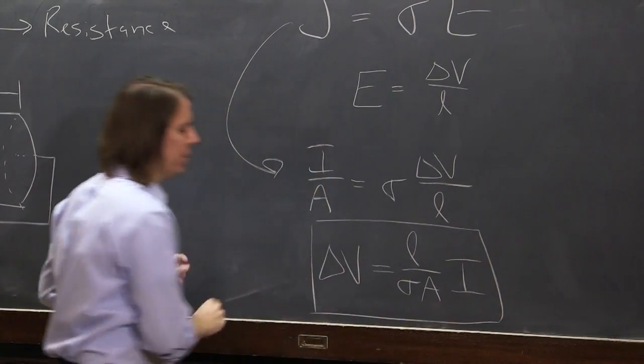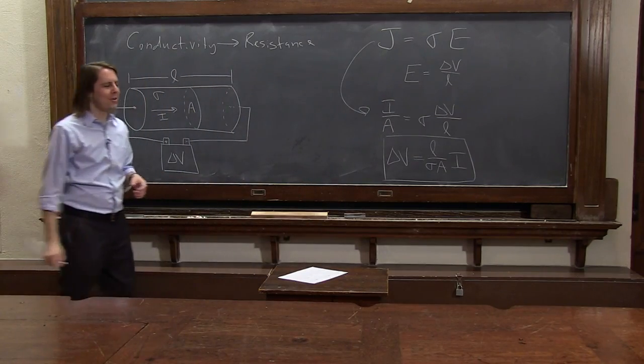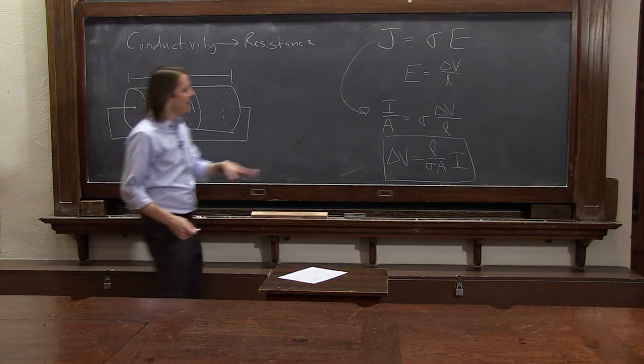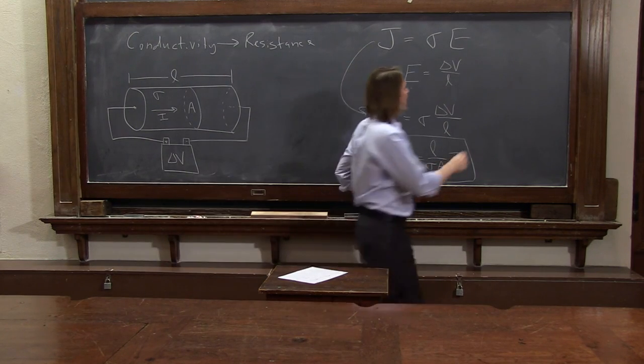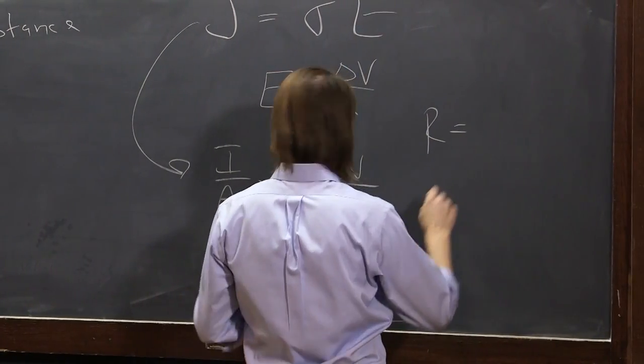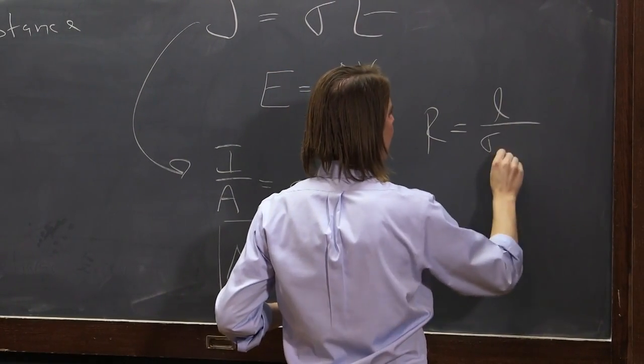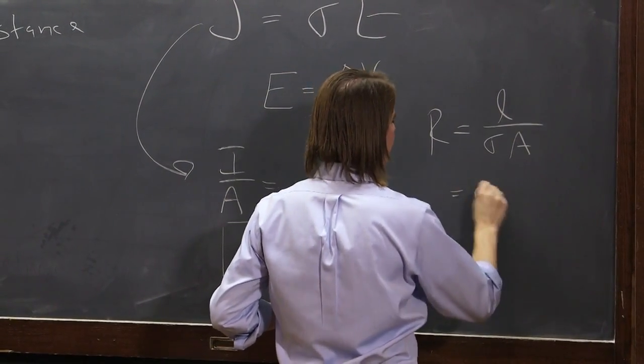And that's actually the Ohm's law you're used to. V equals IR, V equals I, and this must be R. So this R for the wire is L over sigma A, is the resistance of the wire.